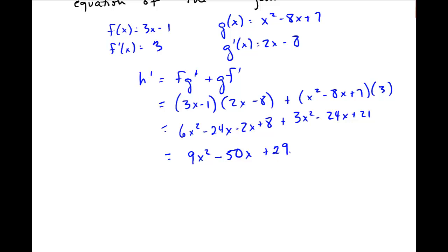And I get an 8 and a 21 is plus 29. So that's the derivative of this function, h prime. Now this derivative at a point is the slope of the tangent line. So the slope of this tangent line is h prime, and we're looking at the point 2, right?